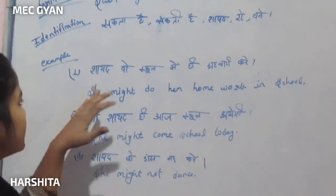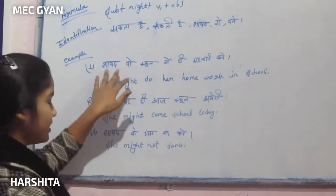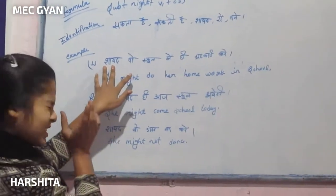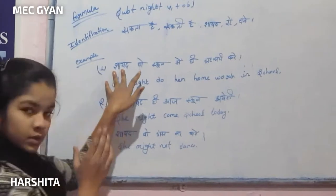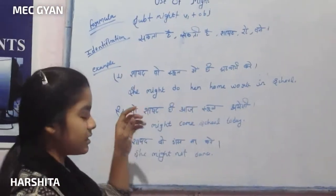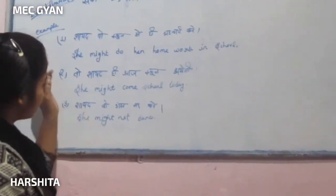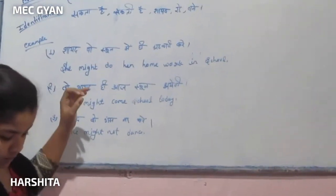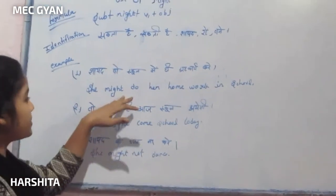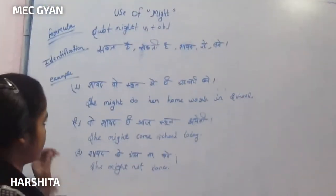You will be confused that here is written 'perhaps'. Why in this sentence is 'perhaps' not used? Because 'perhaps' is already attached here, so don't use 'perhaps' separately.